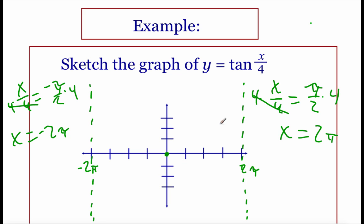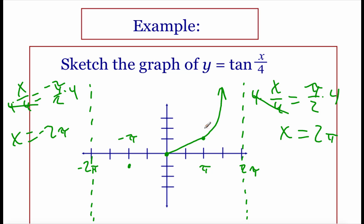To find the next points, I'll use midpoints. Halfway between 0 and 2π is π. Plugging π in: tan(π/4) = 1, so I plot the point (π, 1). On the negative side, halfway between 0 and -2π is -π. Plugging in -π: tan(-π/4) = -1, so the point is (-π, -1). Using these points, I draw from 0 to the right hitting (π, 1), and the asymptote makes the graph go straight up. Going left from 0, hitting (-π, -1), and the asymptote makes the graph go straight down.